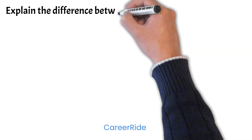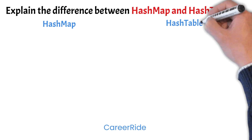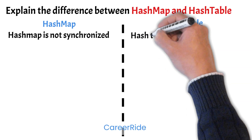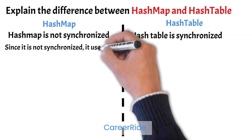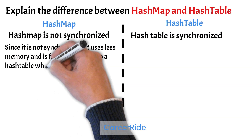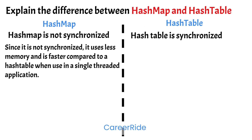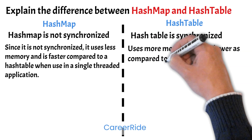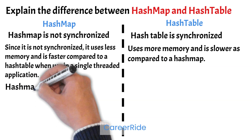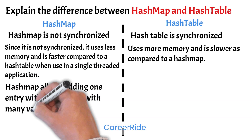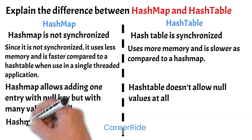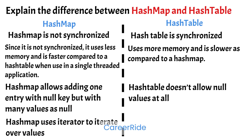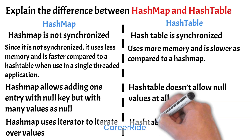Explain the difference between HashMap and HashTable. A HashMap is not synchronized, whereas HashTable is synchronized. Since a HashMap is not synchronized, it uses less memory and is faster compared to the HashTable when used in a single-threaded application. HashTable uses more memory and is slower compared to a HashMap. A HashMap allows one null key and multiple null values, whereas HashTable doesn't allow null values at all. In HashMap, iterators are allowed to iterate each mapped pair, whereas HashTable uses enumerators.